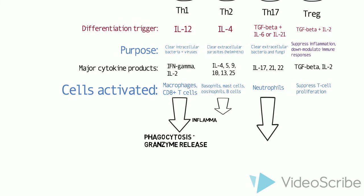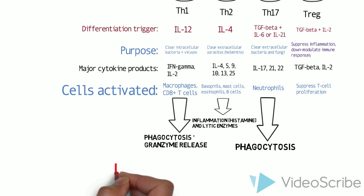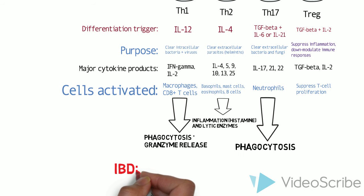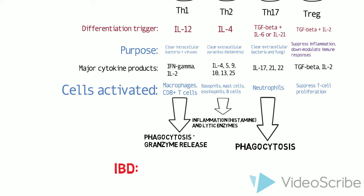The Th1 pathway leads to phagocytosis and the release of lytic enzymes, including granzyme. Th2 leads to the release of histamine, which can cause allergic reactions, and lytic enzymes which degrade cell membranes. Th17 neutrophils are mainly involved in phagocytosis.